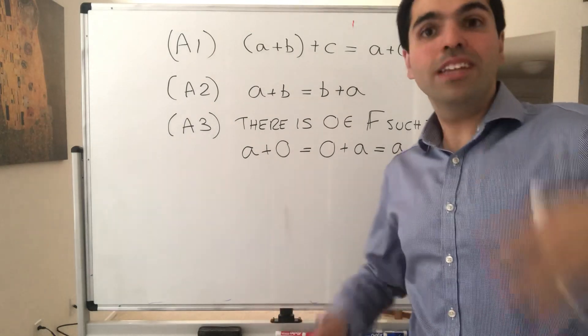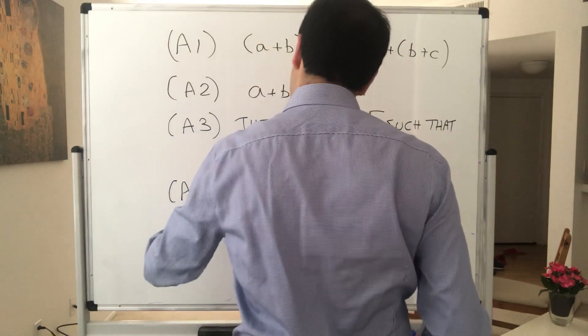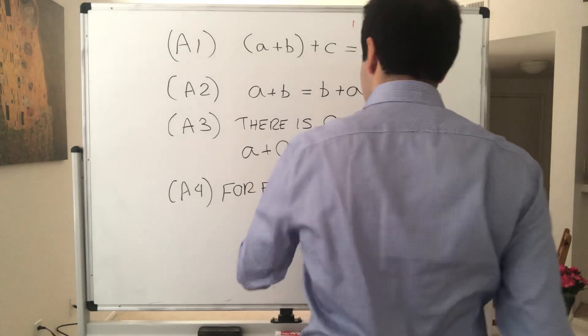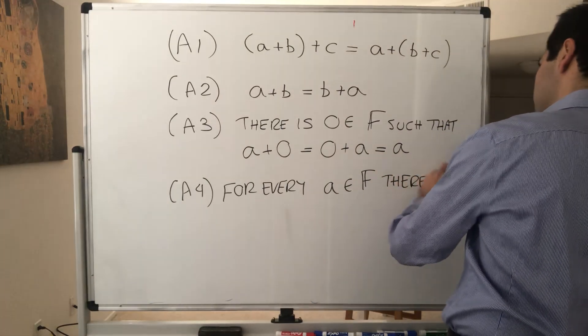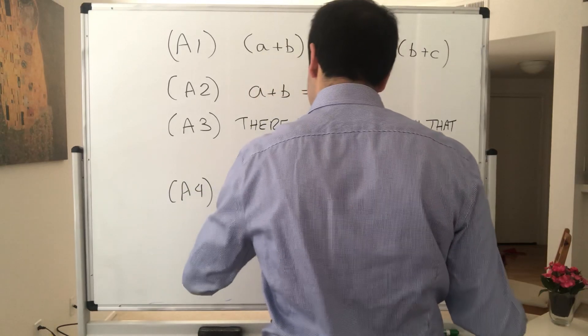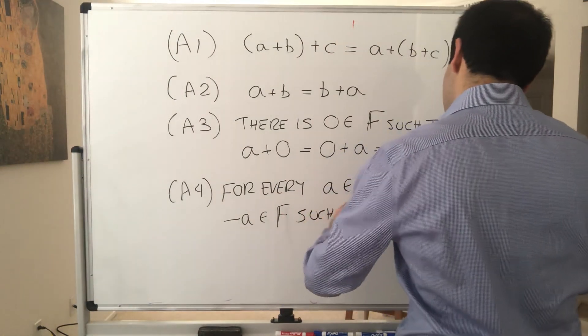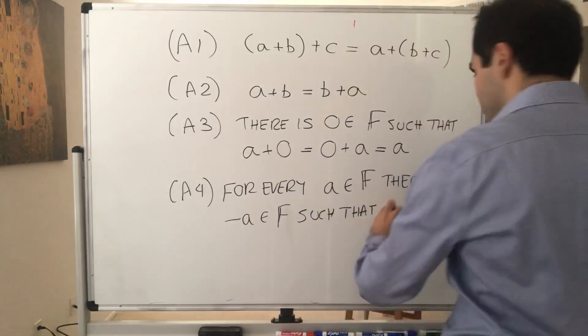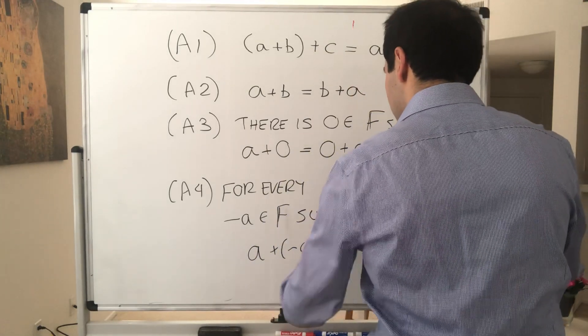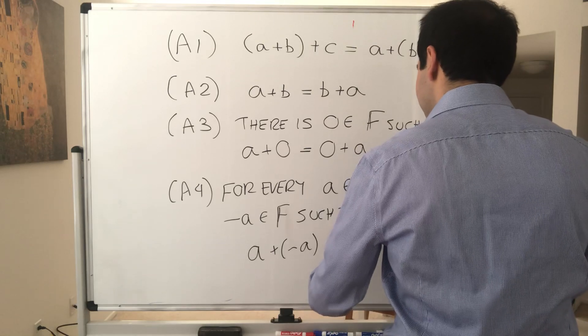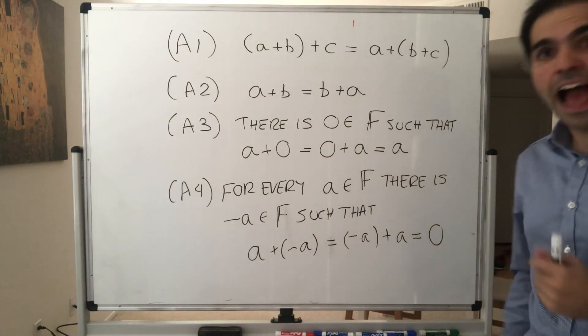And then basically you can subtract things. In other words, for every a in F, there is something called minus a in F. So kind of the antidote to whatever a is, such that, in other words, if you subtract a from a, you get zero. So a plus minus a equals minus a plus a equals zero. So that's what's called an additive inverse.